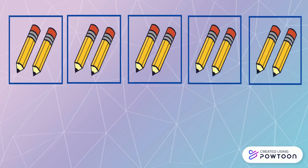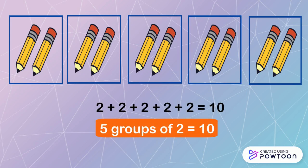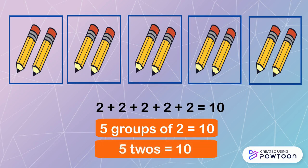The last example. How many groups of pencils are there? Great! Five groups of pencils. And each group has two pencils. So, all together, there are ten pencils. So, we can write five groups of two is equal to ten. Or, five twos is equal to ten.